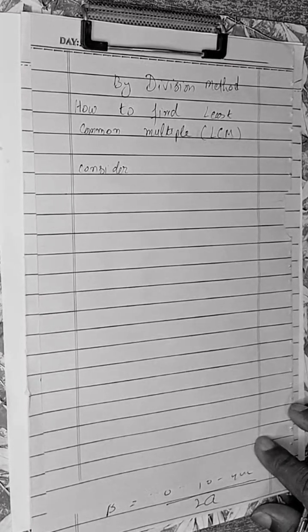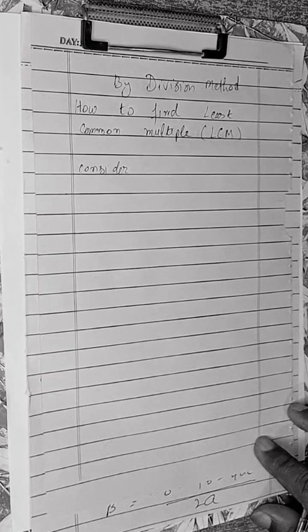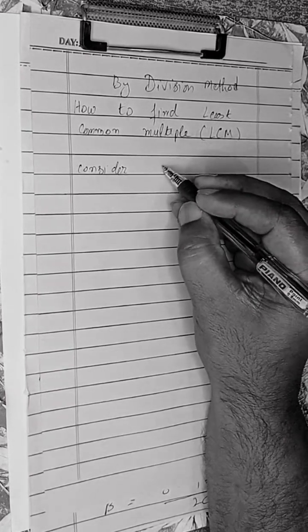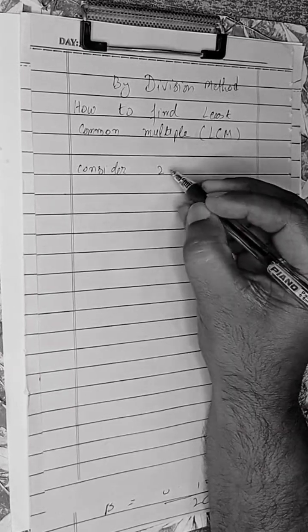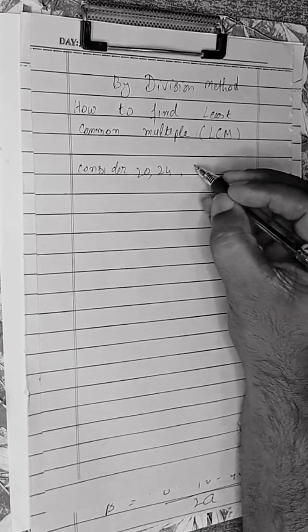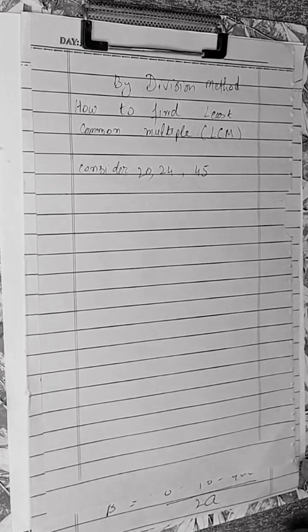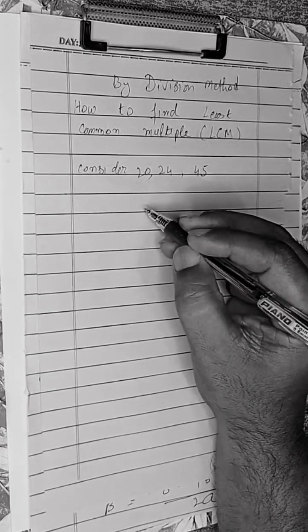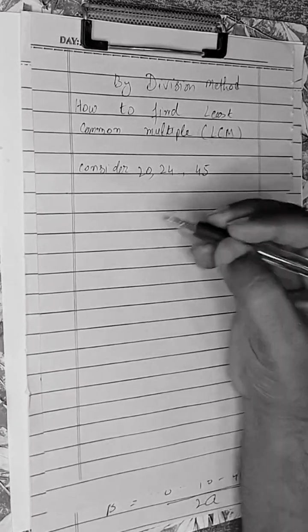We are going to find the least common factor by division method. Consider numbers 24, 20, and 45. There is a procedure in the way how to find the least common multiple.